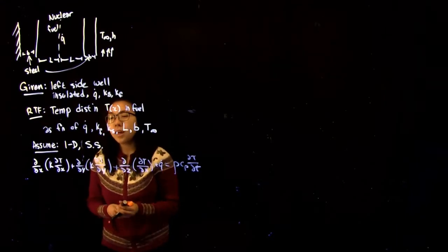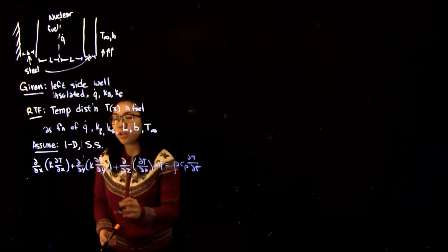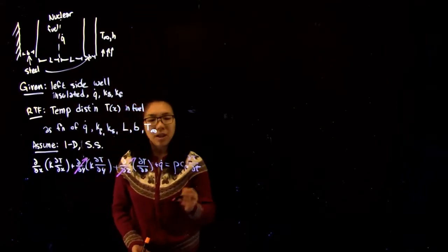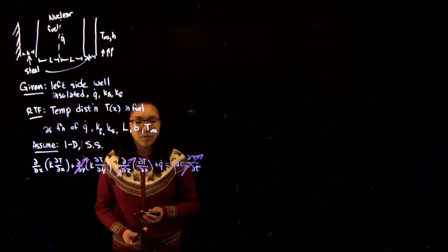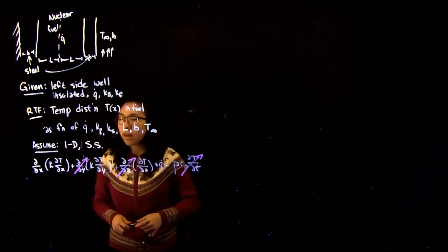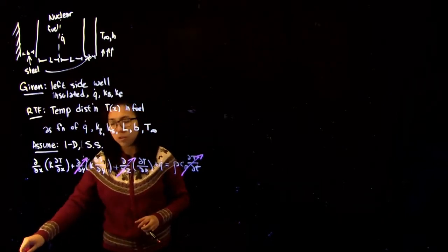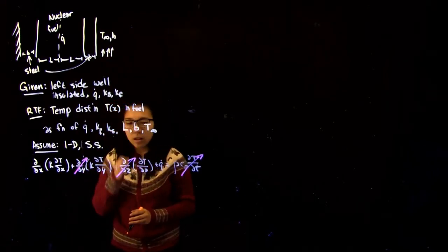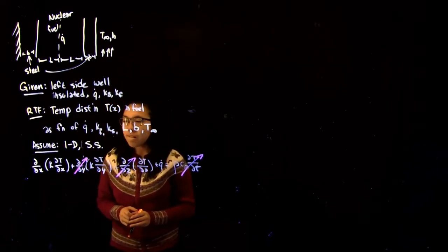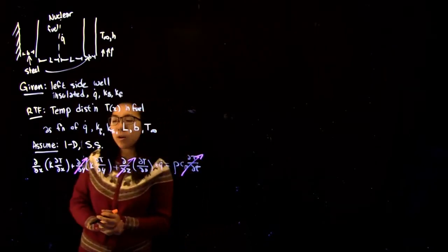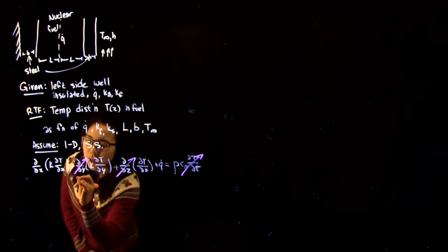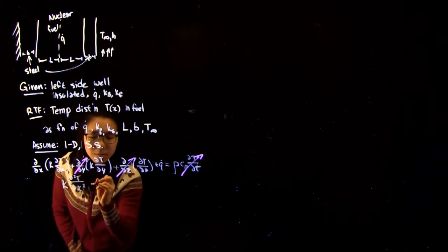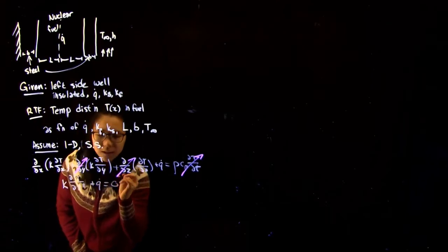We can now apply our assumptions to the heat diffusion equation. Because it's a one-dimensional case, all the terms in the y and z directions go to zero. We've also set steady state so the right-hand side also goes to zero. We can also assume a constant k value, giving us: k · d²T/dx² + q-dot = 0.